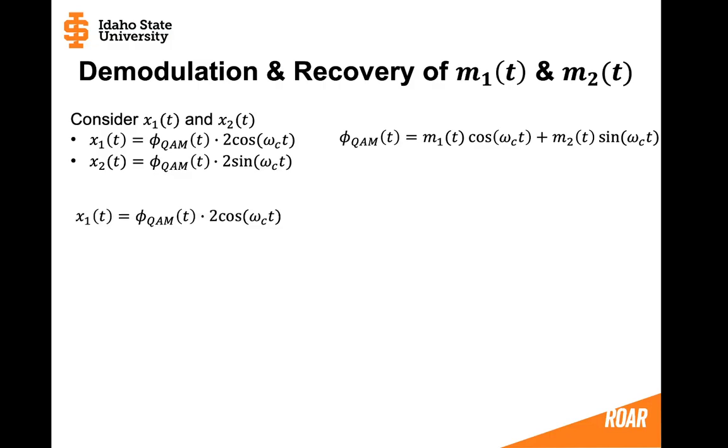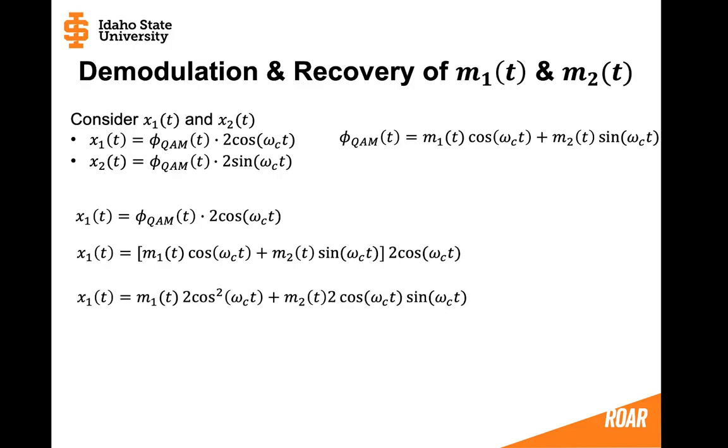So let's start with X1 and this is the QAM signal being demodulated by a cosine wave. We'll substitute in the QAM signal to get this. We will simplify by distributing to this.